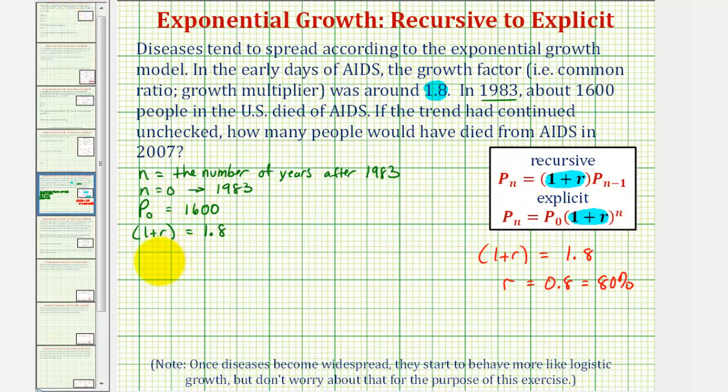We would have p sub n equals p sub 0, the initial population of 1,600, times 1 plus r raised to the power of n, or 1.8 raised to the power of n.